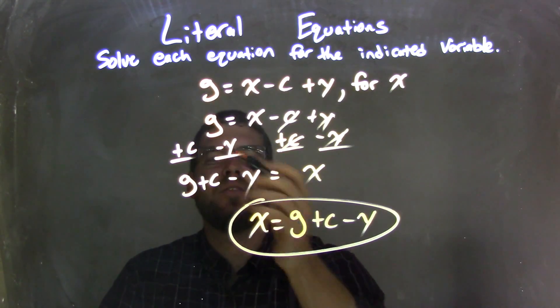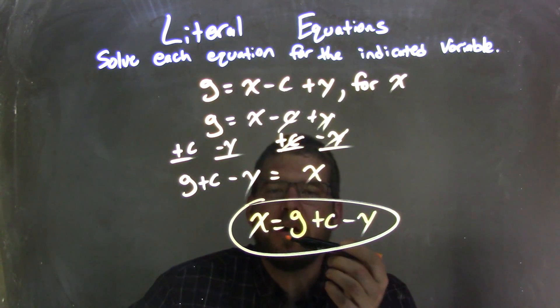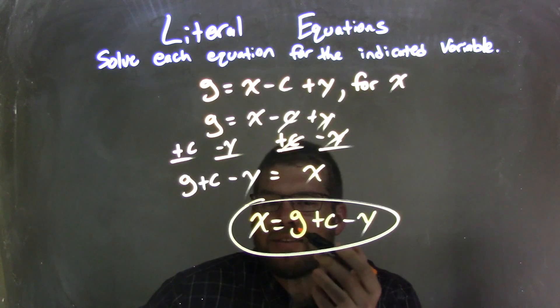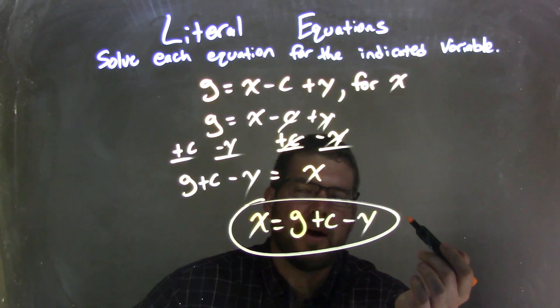Well, no like terms, can't combine g plus c minus y, and there we go. So our final answer is x equals g plus c minus y.